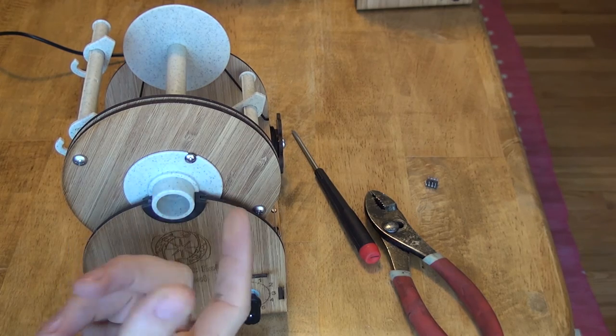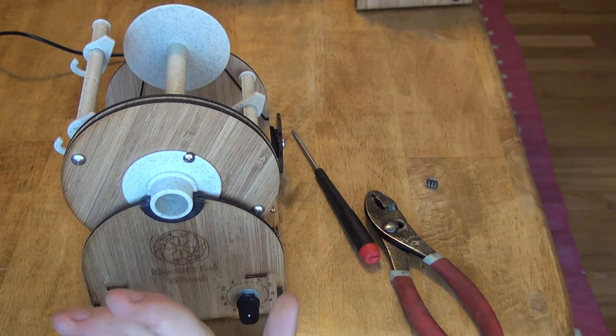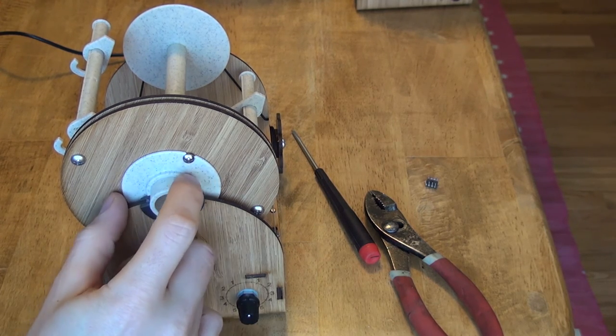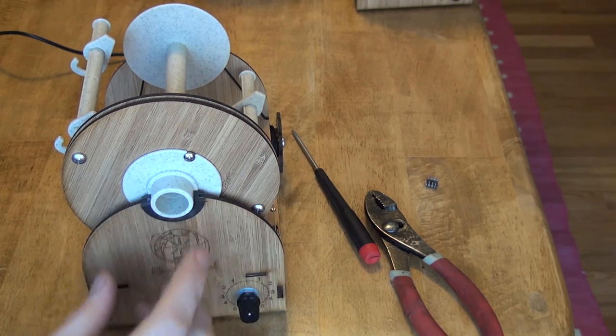But basically, the best way to fix it, and the way to completely fix it, is to just run your electric eel wheel for a few hours. And the problem will kind of, these two pieces will mate better. And the problem will go away.